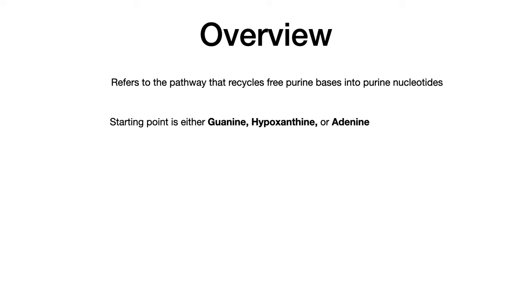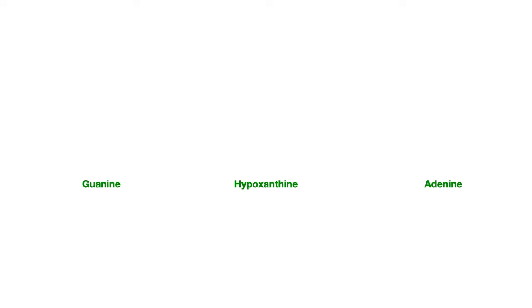The starting point for purine salvage is going to be guanine, hypoxanthine, or adenine. On this slide, you see the free bases — guanine, hypoxanthine, and adenine — shown here in green. Let's start with guanine and hypoxanthine because those two are much more important than adenine in terms of understanding them for the purposes of exams.